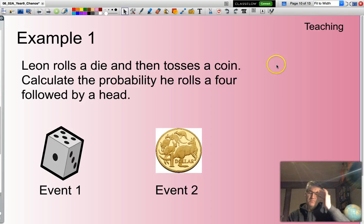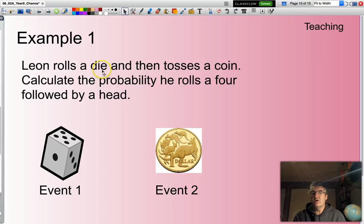Let's look at another problem. Now, Leon's sort of moved on a little bit. This time, he's going to roll a die, and then toss a coin. Calculate the probability he rolls a four, followed by a head.